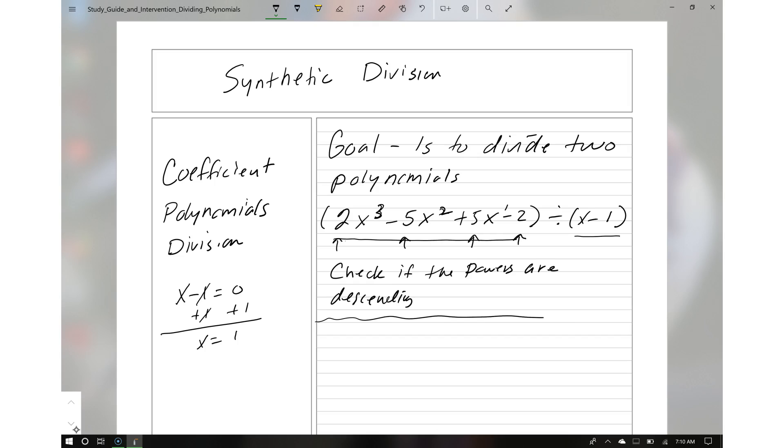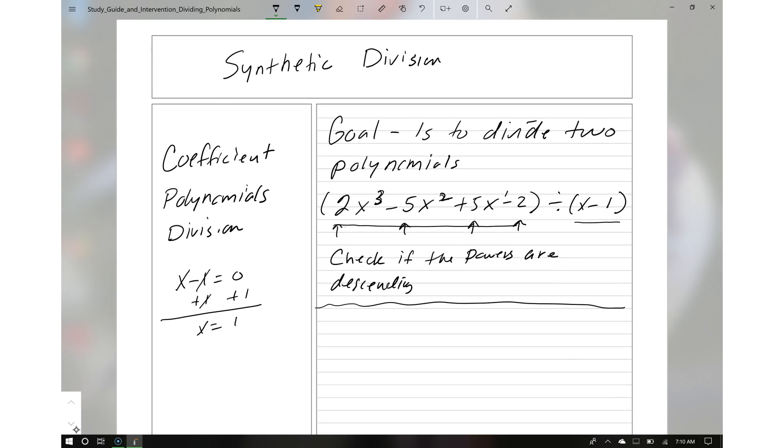Here is the process for synthetic division. The 1 is going to go right here. And then what you're going to do is list the coefficients, and you've got to make sure that it's done accurately. So we have 2 here, that's our first coefficient. Here's our second coefficient, the third one, and then the fourth one. So we're good.